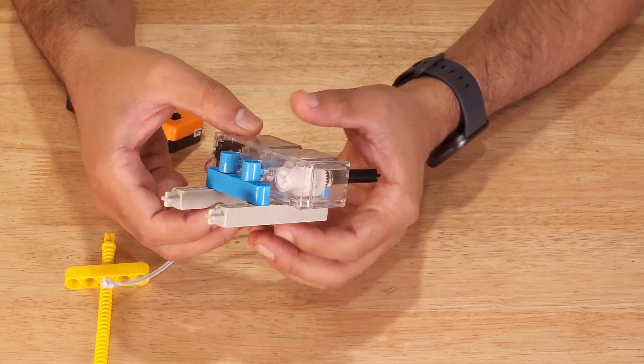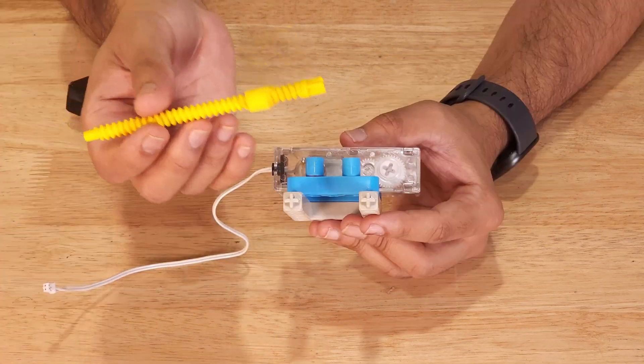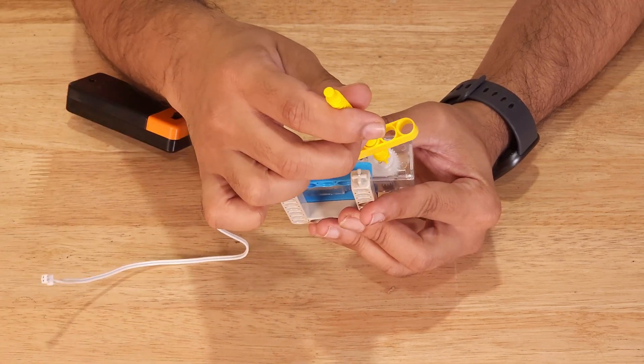Now you can see that the motor is attached to the surface like this. Make use of proper connections to attach the motor to the surface. Now, what we do is attach the power screw in this section of the motor.